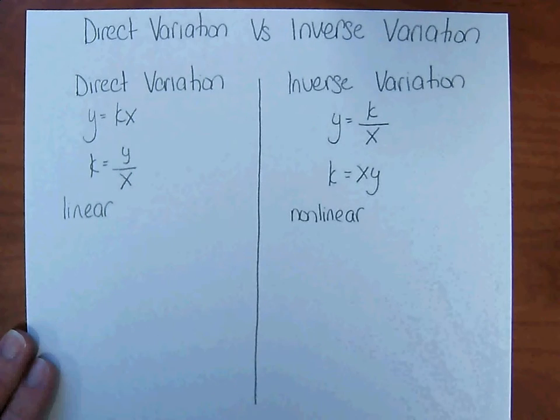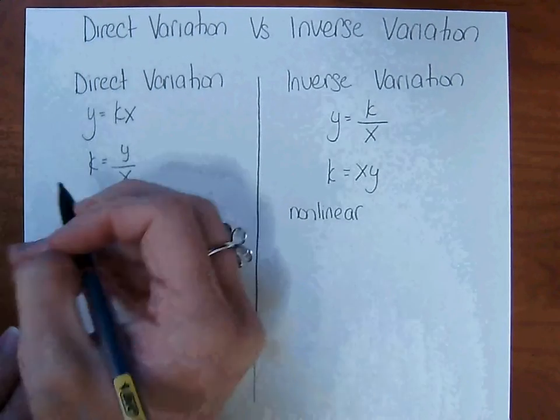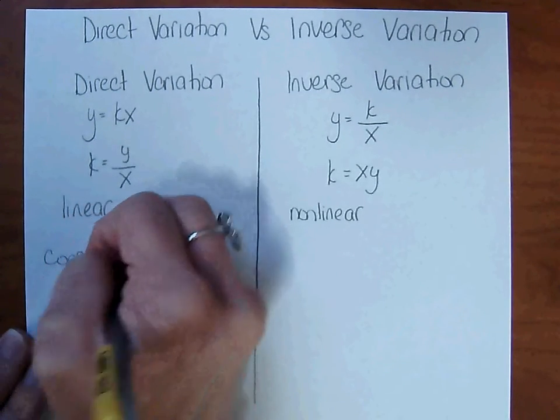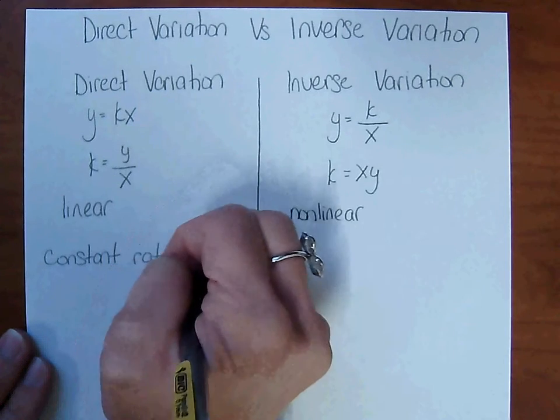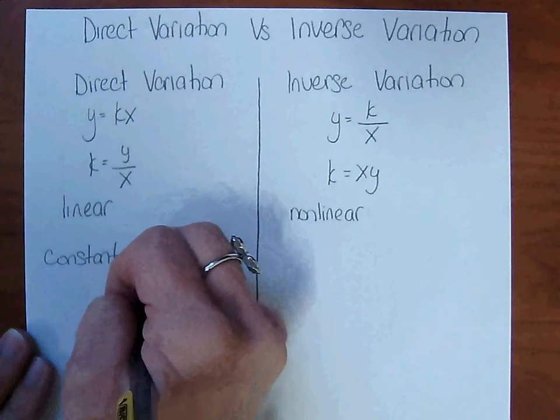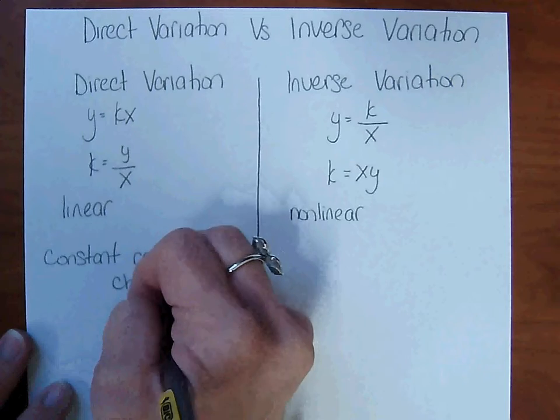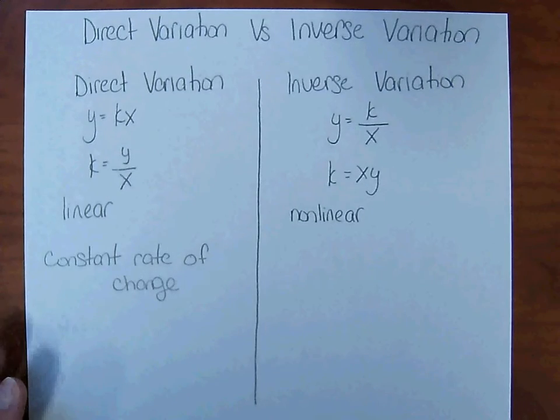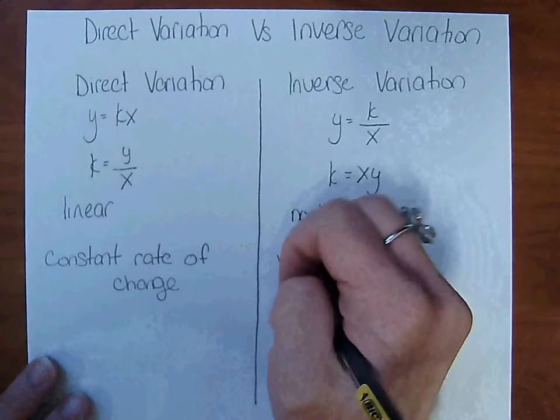Since direct variation is linear, that means it has a constant rate of change. Remember, all linear functions have a constant rate of change. And since inverse variation is nonlinear, it has a variable rate of change.